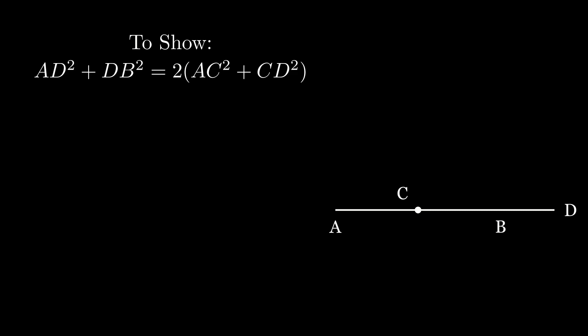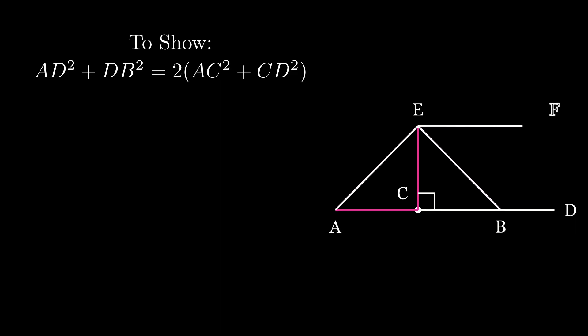So let's start with the construction. We will draw CE perpendicular to AB and CE will be equal to AC. We will then connect AE and EB, and then draw EF parallel to CD and DF parallel to CE.